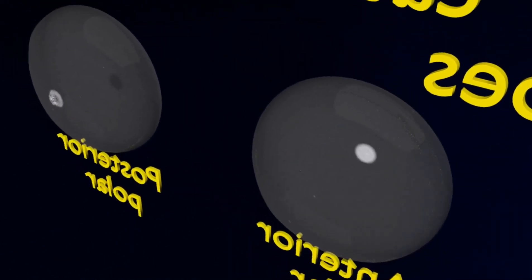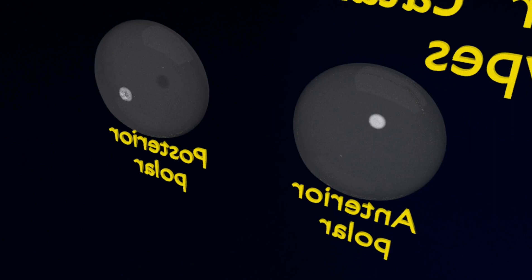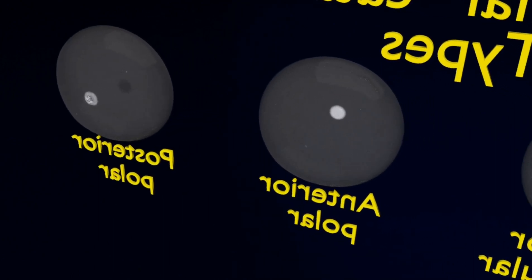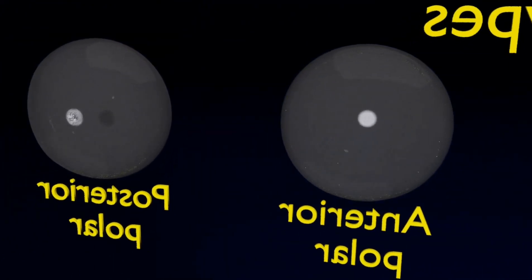The posterior polar: The cloudiness occurs outside the boundary of the posterior or back part of the cortex lens.